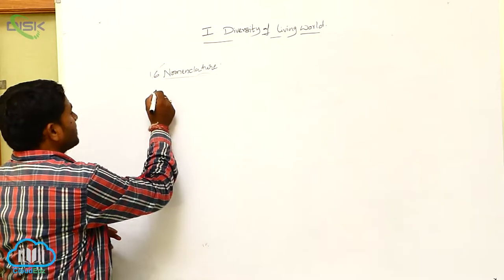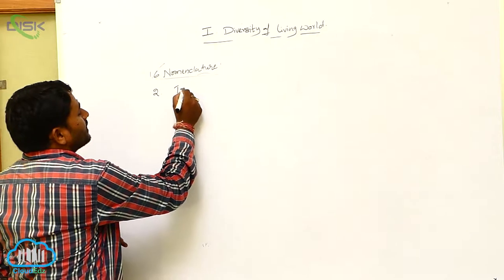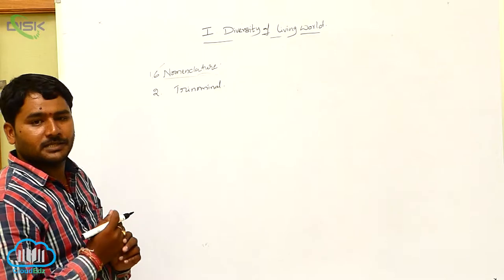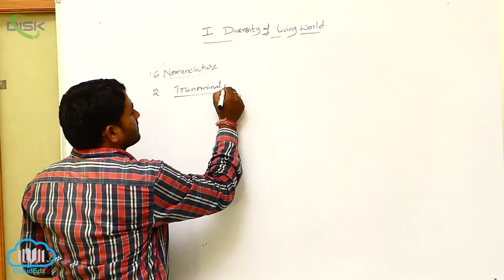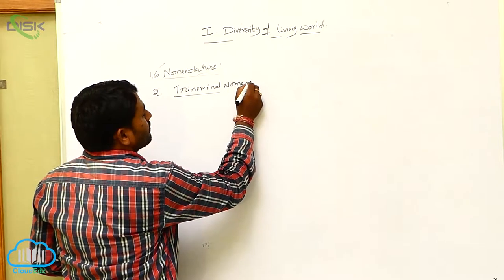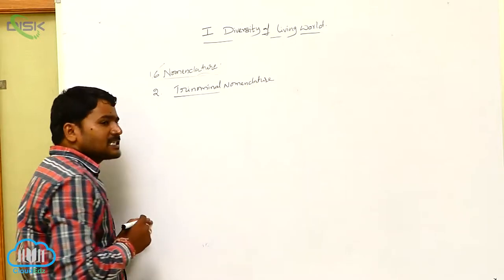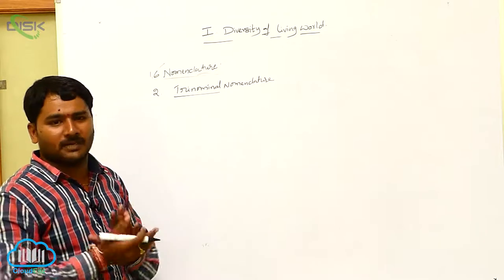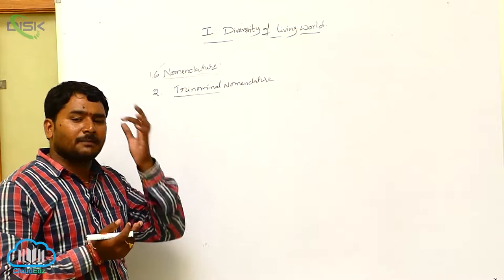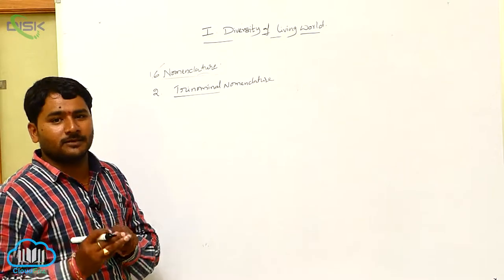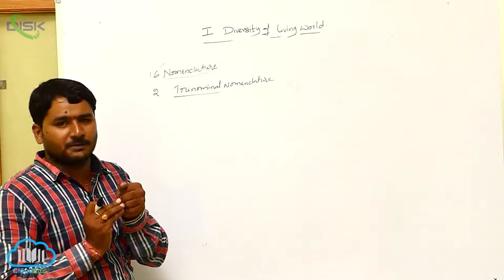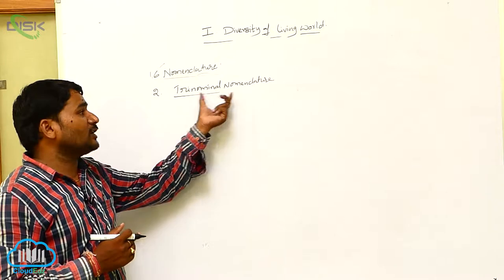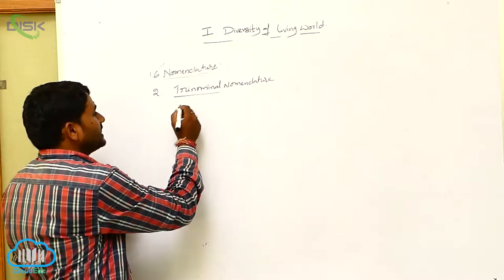The second topic is trinomial nomenclature. Trinomial nomenclature is simply the extension of binomial nomenclature. In binomial nomenclature, we have two words: the first word is the genus and the second word is the species. But in trinomial nomenclature, the scientific name has three words.